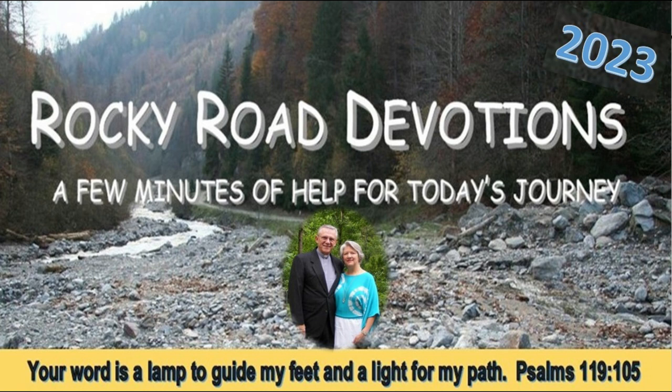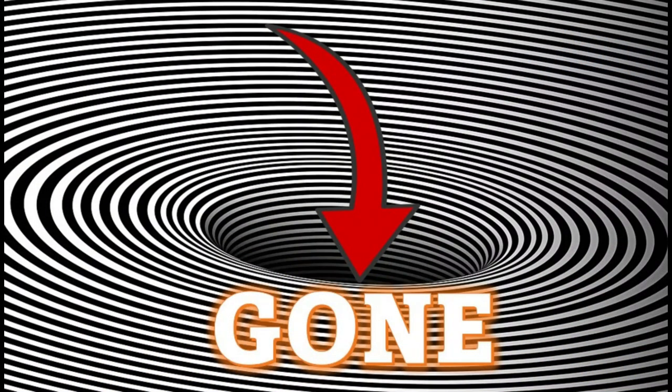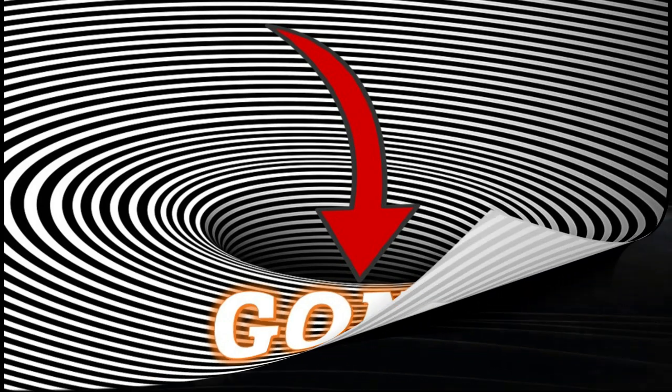Good morning, it's Tuesday, October 24th, 2023. My name is Russell and this is Rocky Road Devotions, a few minutes of help for today's journey. Our devotion today is entitled 'Gone' and our scripture is Revelation chapter 18, where the Apostle John writes about God's judgment.